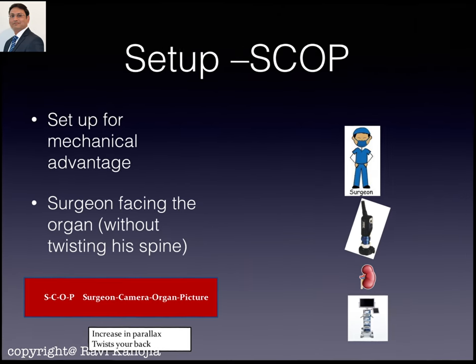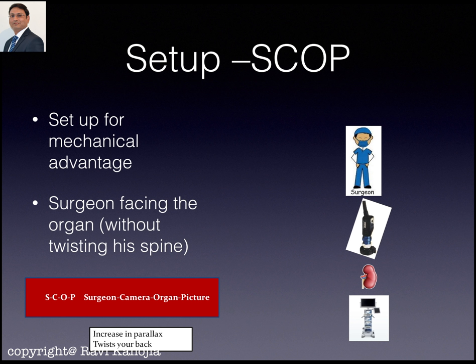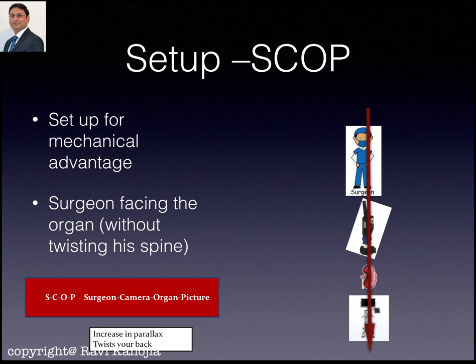Once familiar with the basic aspects of your patient, you have to set up the hardware around you for the best possible mechanical advantage. The principle is that the surgeon faces the organ without twisting his spine. The basic line of surgeon–camera–organ–picture must be in a straight line; if not, there is physical discomfort and increased parallax. Whatever hand-eye coordination you are trying to achieve, you will have difficulty if you are not standing in that particular straight line.